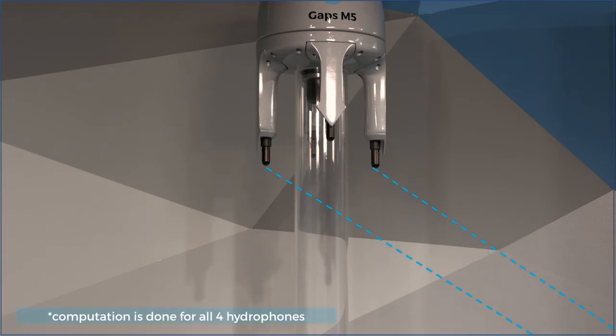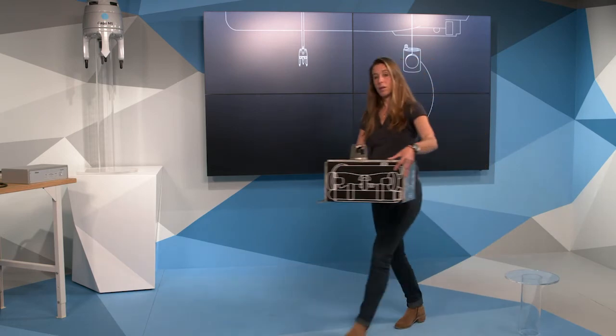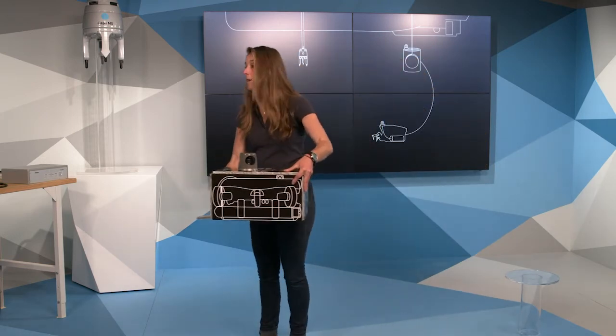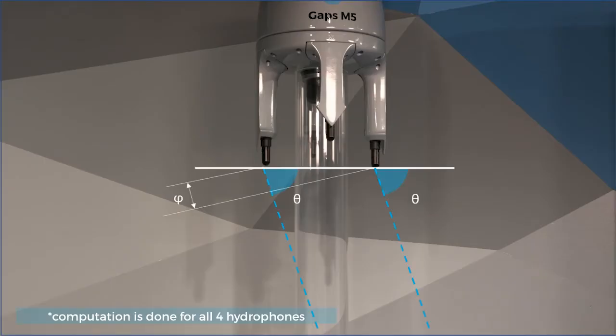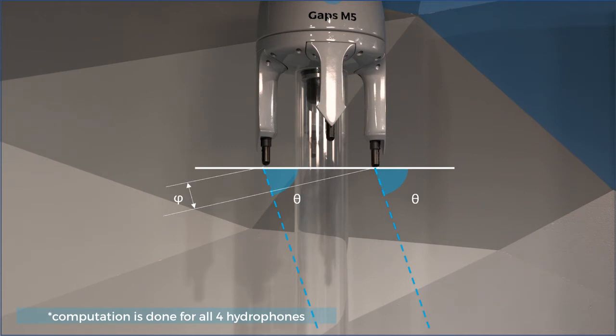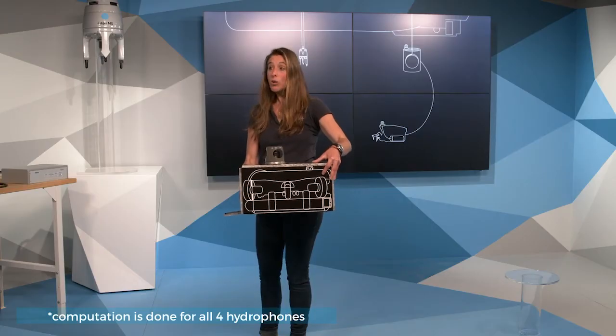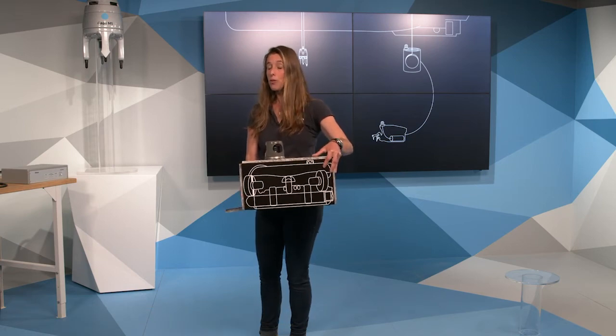At the same time, you also have angles and phase measurements. If the ROV moves underwater, then you have the same calculation with four travel time receptions, angle and phase measurements. That allows the GAPS to calculate a very accurate transponder position.